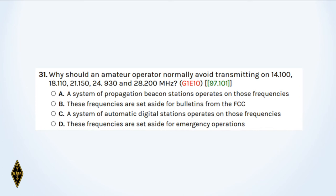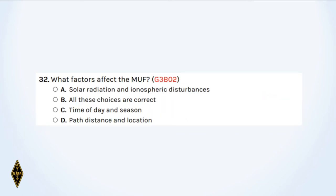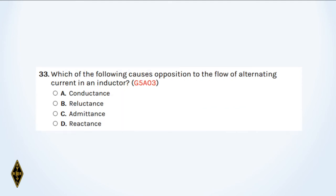And 32: What factors affect the energy of a transmitter? And 33: Which of the following causes opposition to the flow of alternating current in an inductor?